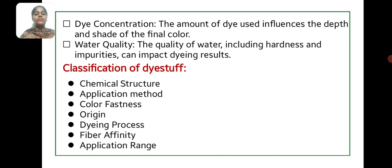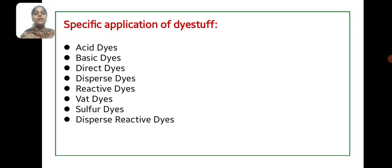Classification of dye types is based on chemical structure, application method, color fastness, dyeing process, fabric affinity, and specific applications of fiber.